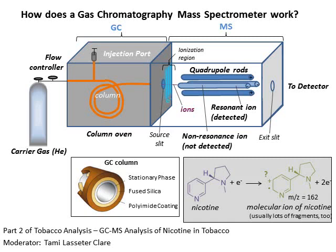We are often interested in the fragmentation pattern produced by the mass spec because molecules form a pattern that is characteristic of each individual type of molecule. These days it is possible to do a library search within the computer database against files containing mass spectra of many different types of molecules, and the search results return good matches, making it fairly easy to identify the likely molecule if your sample is an unknown.